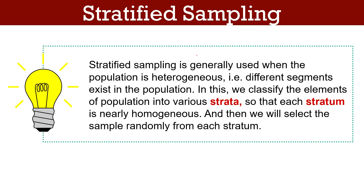Stratified Sampling is generally used when the population is heterogeneous, i.e. different segments exist in the population. In this we classify the elements of the population into various strata so that each stratum is nearly homogeneous. Thereafter we will select the sample randomly from each stratum.